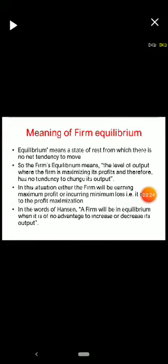The meaning of firm equilibrium: equilibrium means a state of rest where there is no tendency to move. The firm's equilibrium is the level of output where the firm is maximizing its profits and has no tendency to change its output. In the words of Hansen, a firm will be in equilibrium when it is of no advantage to increase or decrease its output.